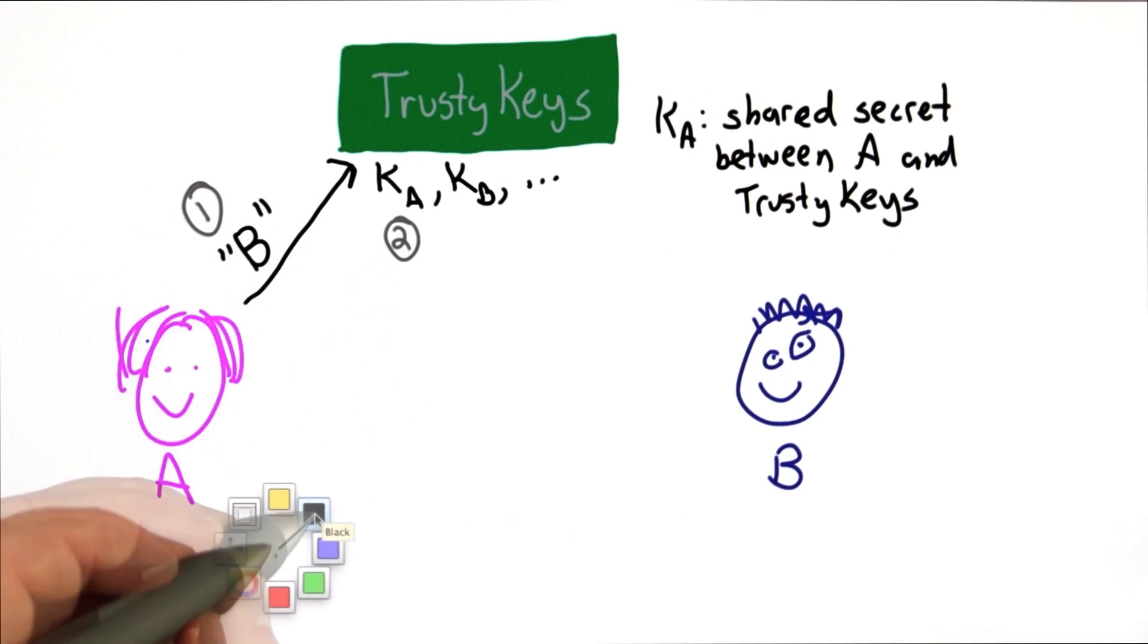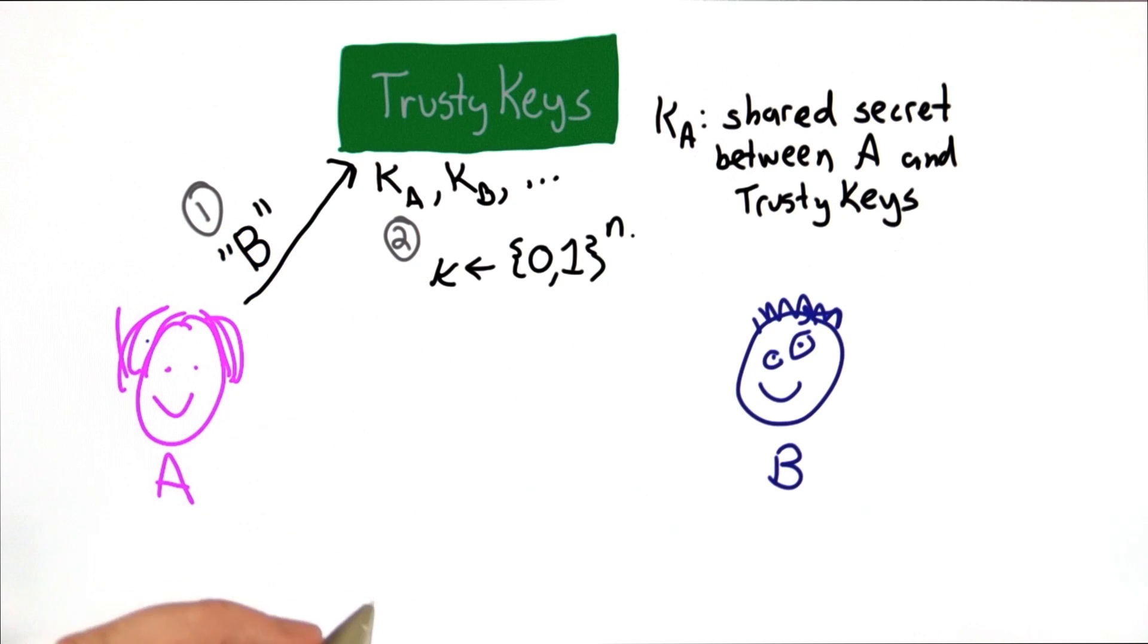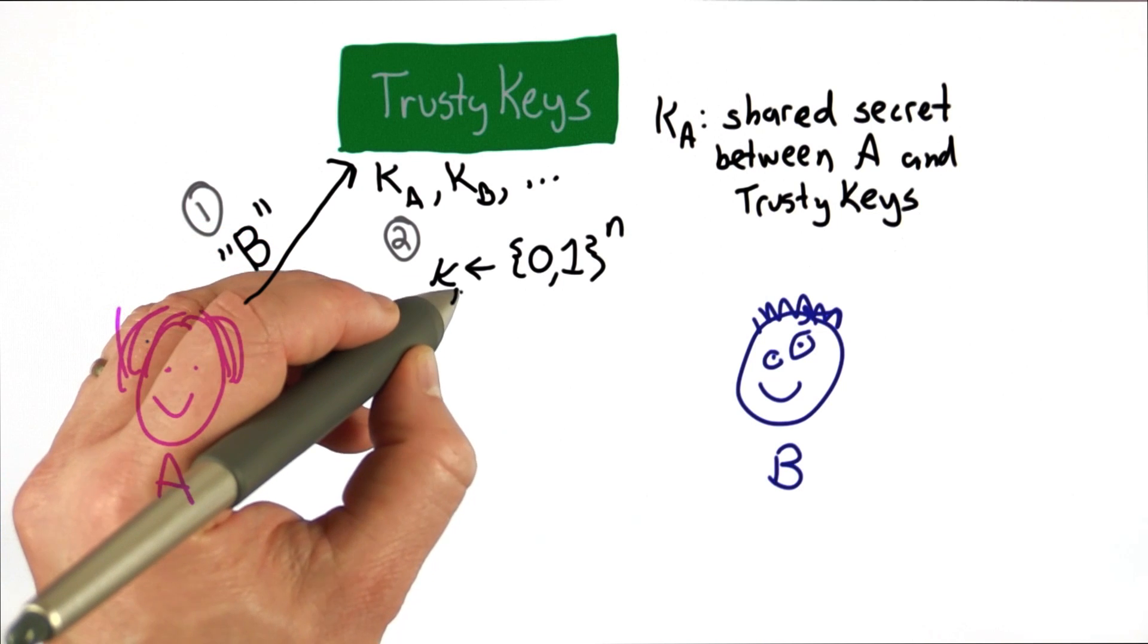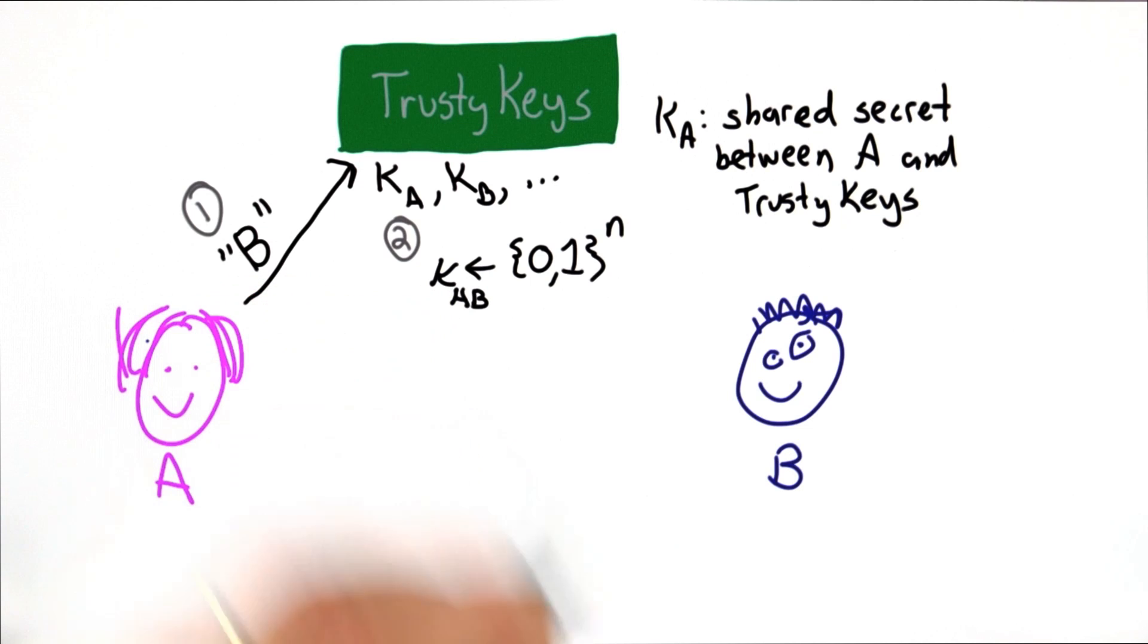What TrustyKeys will do is generate some new key, some new secret key, and we'll call that KAB because it's for Alice to communicate with Bob.